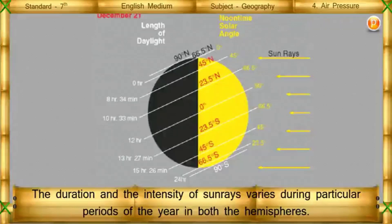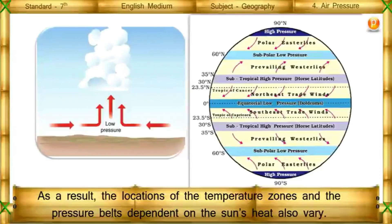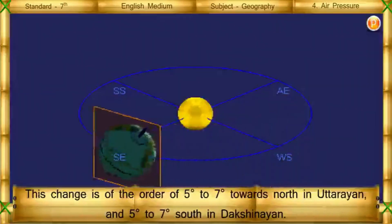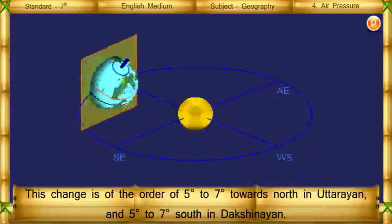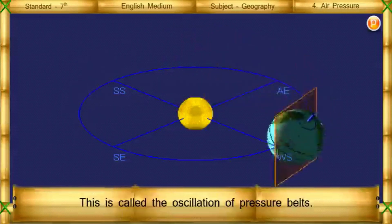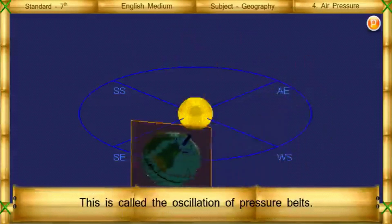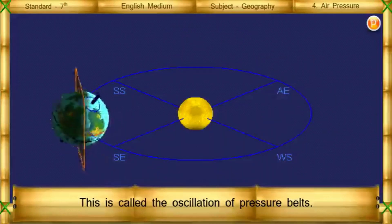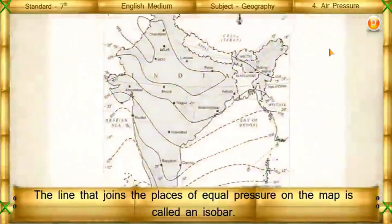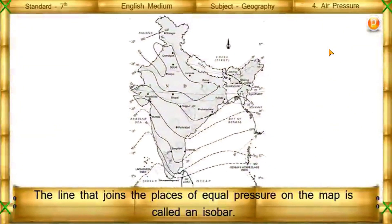The duration and intensity of sun rays varies during particular periods of the year in both hemispheres. As a result, the location of the temperature zones and the pressure belts dependent on the sun's heat also vary. This change is of the order of 5 to 7 degrees towards the north during Uttarayan and 5 to 7 degrees towards the south during Dakshinayan. This is called the oscillation of pressure belts. The line that joins places of equal pressure on the map is called an isobar.